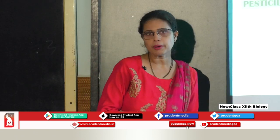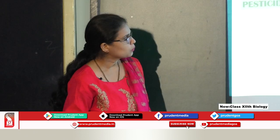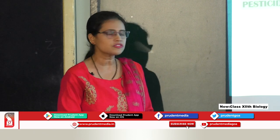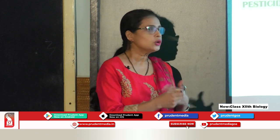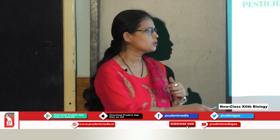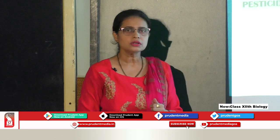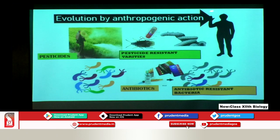Another example is antibiotic-resistant microbes. Whenever we have a bacterial infection, we take antibiotics. Antibiotics kill most of the bacteria, but there may be some which are antibiotic-resistant because they have those genes. They will survive and start increasing in number. Through the antibiotics that human beings use, we have created so many antibiotic-resistant bacteria. This is called evolution through anthropogenic action.